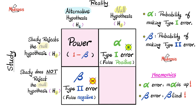Understanding this two-by-two table is of utmost importance. In the first horizontal row, we are rejecting the null hypothesis — we were able to show that there is indeed a correlation. In the second horizontal row, we have failed to reject the null hypothesis, meaning it was accurate. The first column represents the alternative hypothesis; the second represents the null hypothesis. When our study agrees with reality — there is a correlation and we reject the null — this is statistical power, measured as 1 minus beta.